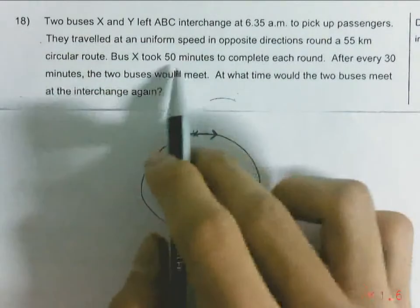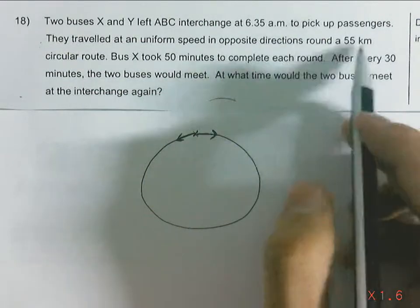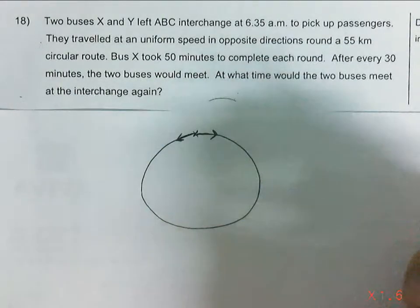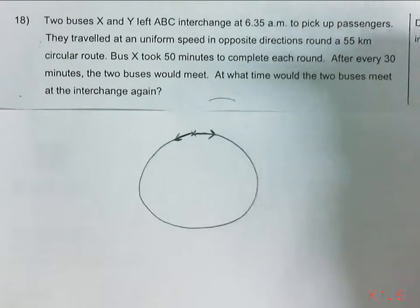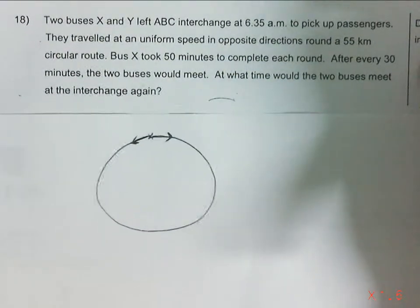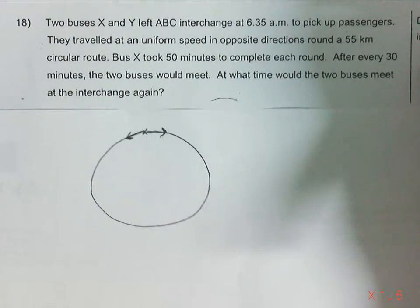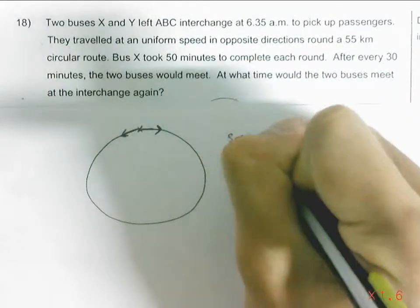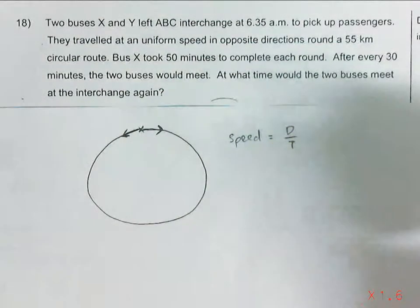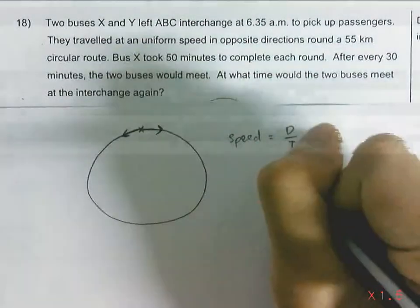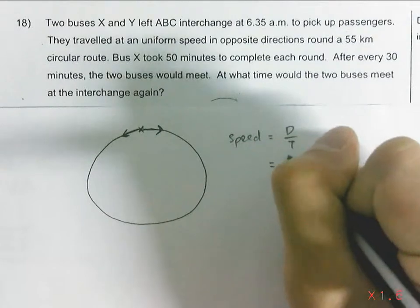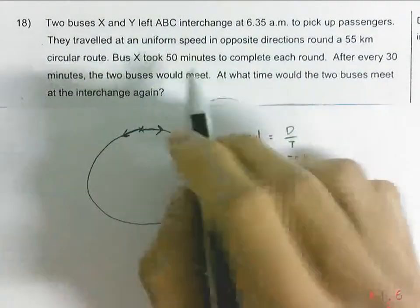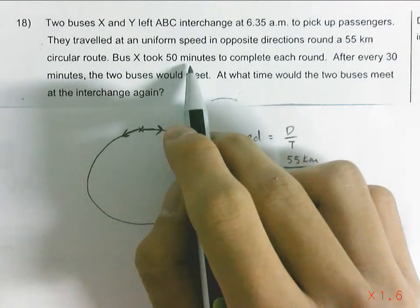So Bus X took 50 minutes to complete each round. From here we can actually label down the speed of the bus. To find the speed of the bus, we will just simply take distance divided by time. So the distance, 55km divided by time. Now 50 minutes is 5 over 6 hour.